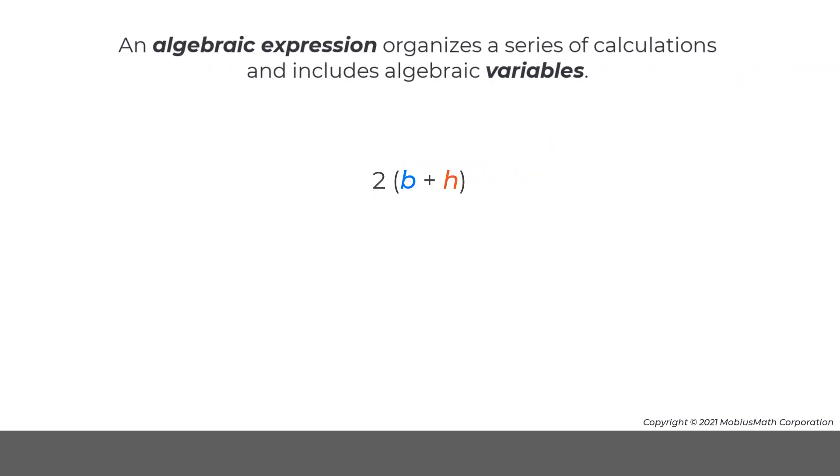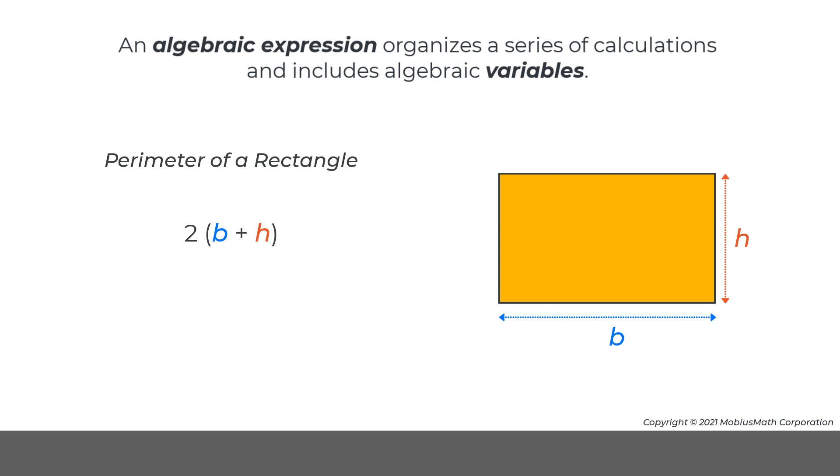An algebraic expression organizes a series of calculations and includes algebraic variables. For example, the following algebraic expression can be used to calculate the perimeter of a rectangle, where b is the base of the rectangle and h is the height.